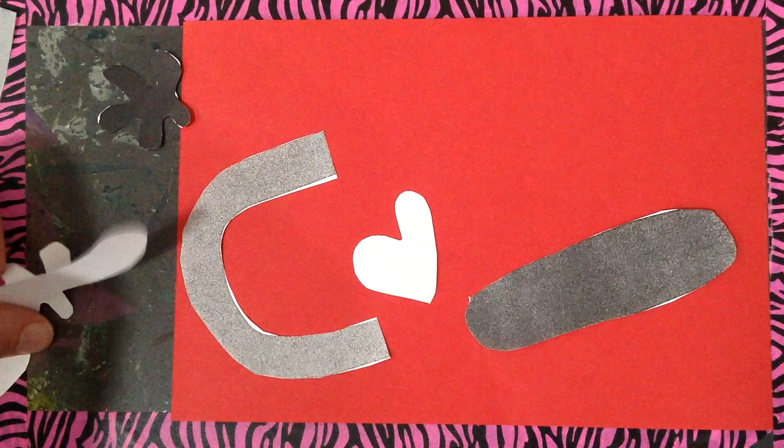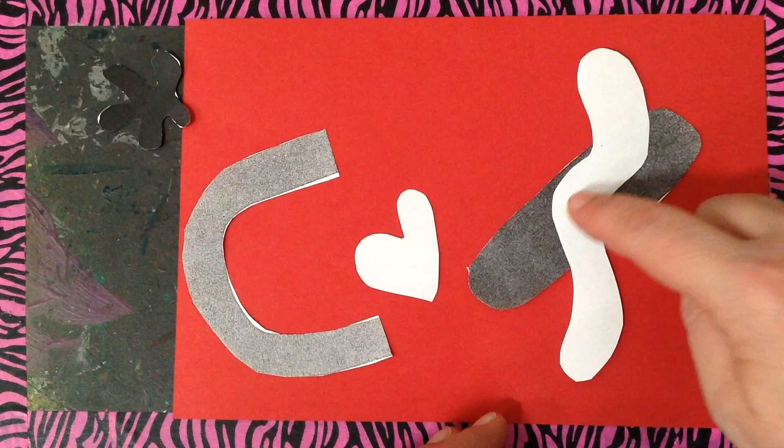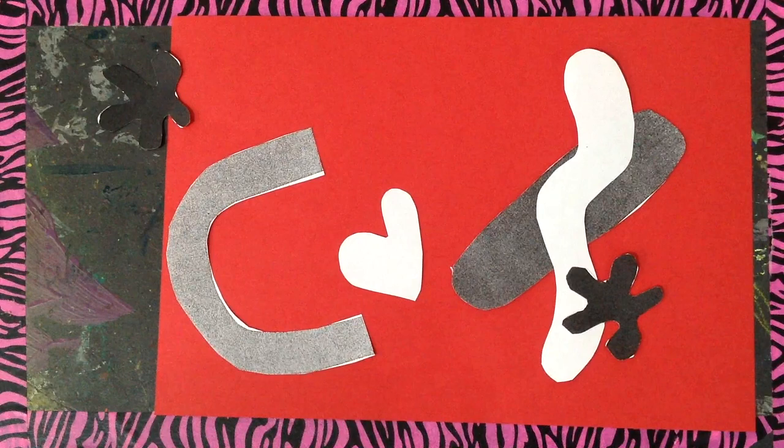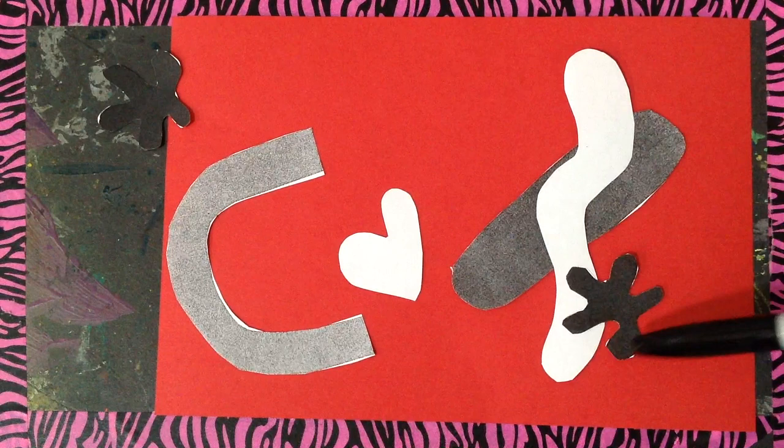One is called overlapping. So if I put a shape on top of another shape, and then even another shape on top of that. And you see that this is white, and this is dark gray, and that's black. And this is called value and contrast.